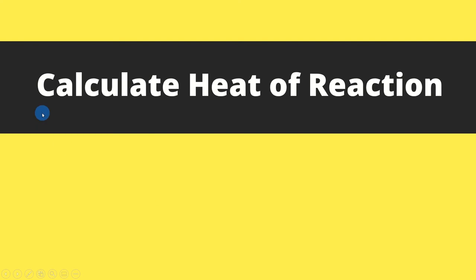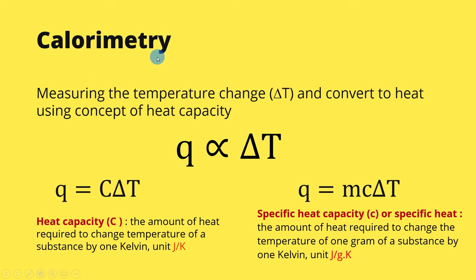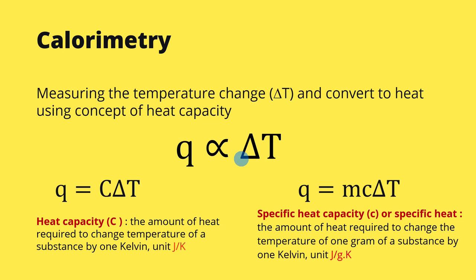Now let's look at how to calculate the heat of reaction. We start with the calorimetry concept — this is how we get the heat of reaction by measuring the temperature change, delta T, and converting it to heat of reaction using the concept of heat capacity. Heat is related to the change of temperature, and it depends on the type of substance — in other words, it depends on the value of the heat capacity. A given amount of heat can change the temperature differently depending on the substance.